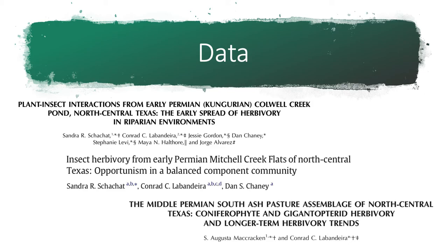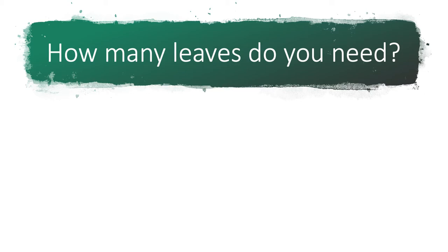To go after these questions, we analyzed data that had previously been published in three papers. All of the data are from the Permian of Texas. In each of the three datasets from each of these localities, we have the damage type diversity measured using the guide I showed earlier, and we also calculated the total amount of leaf surface area examined, as well as the percentage of that leaf surface area that had been eaten by insects.